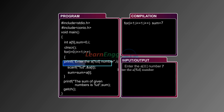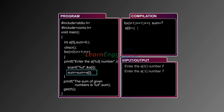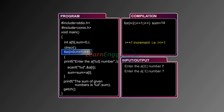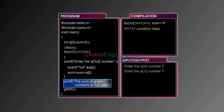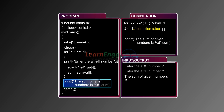The printf statement again prompts for the value of a[1], which the user enters as 7. Sum is calculated as sum = 7 + 7 = 14, so sum is now 14. Then i is incremented to 2, the condition becomes false, and the loop ends. The printf statement displays the output: 'The sum of the given numbers is 14.'